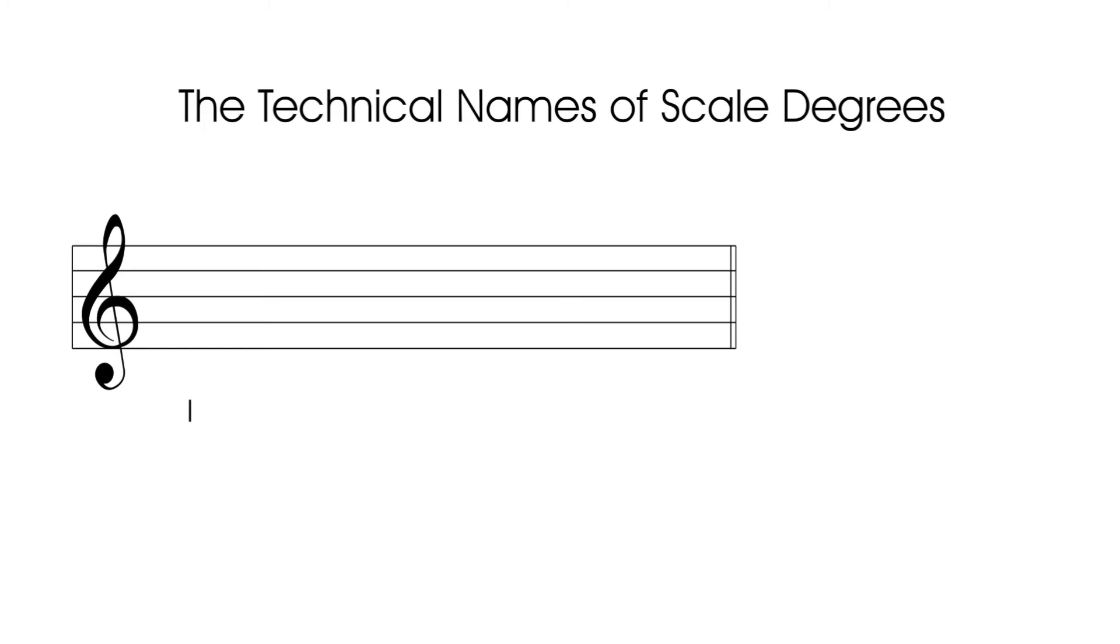The first degree of the C major scale, C, is not only the key note but also the tonal center for everything played in the key of C, and is appropriately named the tonic note.